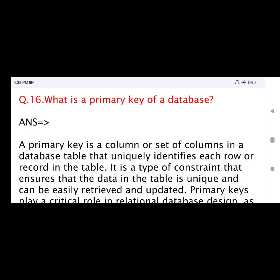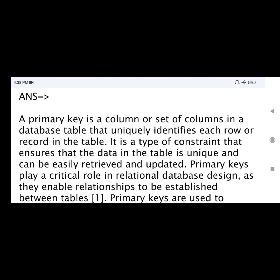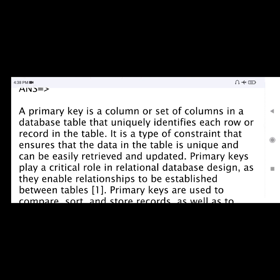Question number 16: What is a primary key of a database? A primary key is a column or set of columns in a database table that uniquely identifies each row or record in the table. It is a type of constraint that ensures that the data in the table is unique and can be easily retrieved and updated.